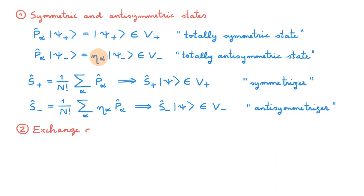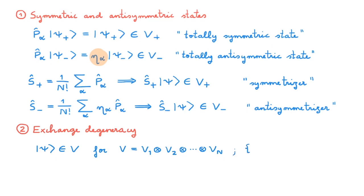The second prerequisite topic is exchange degeneracy. Consider ket psi belonging to the state space V of an n-particle system of identical particles, which as usual is given by the tensor product of single particle state spaces. Also consider the n factorial kets P_alpha psi given by all possible permutations of the n particles. The set of kets spans a subspace of V called V_psi, and any state in V_psi is a state that mathematically describes the same situation. This is what we call exchange degeneracy. However, in the video on exchange degeneracy we found a big problem: any state in V_psi mathematically describes our system, but when we use them to make physical predictions using the usual rules of quantum mechanics we get different answers depending on which state we choose. Clearly this is a problem for any physical theory, so exchange degeneracy needs to be removed.